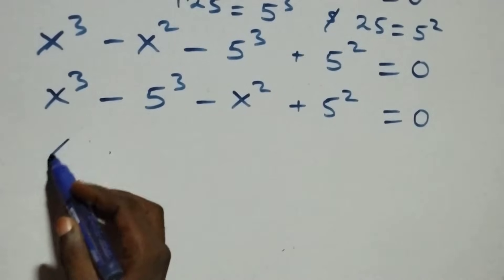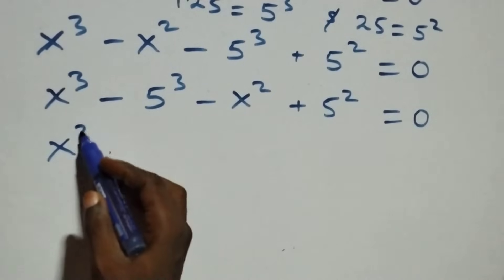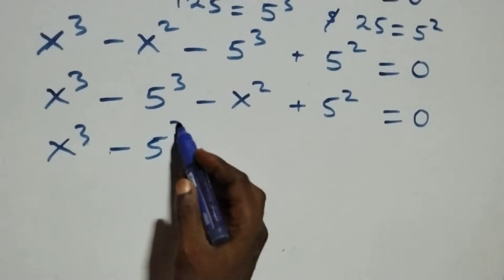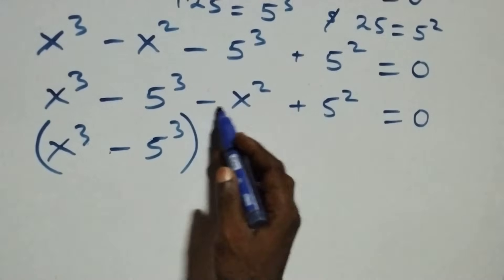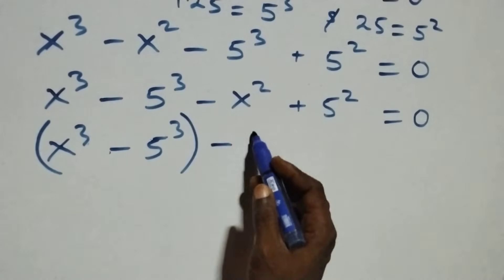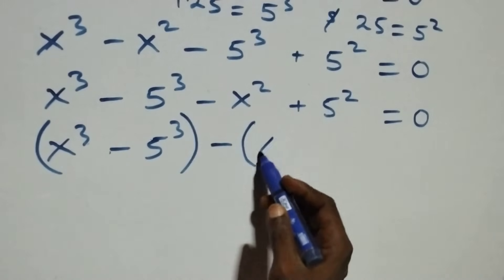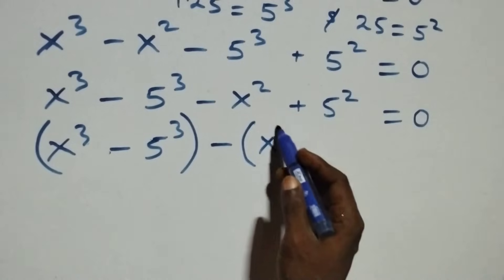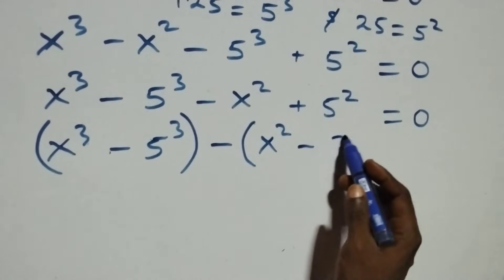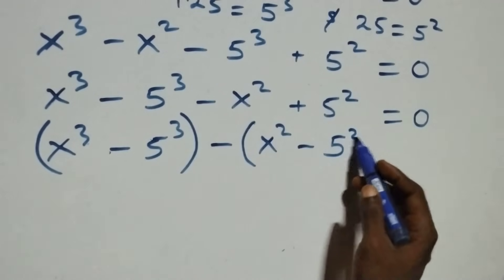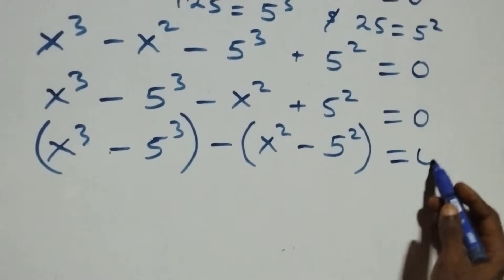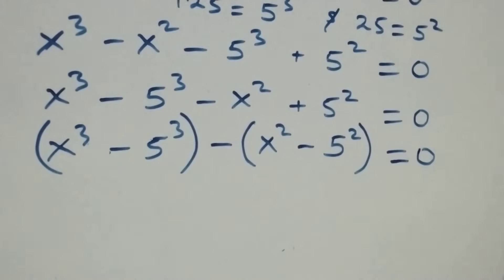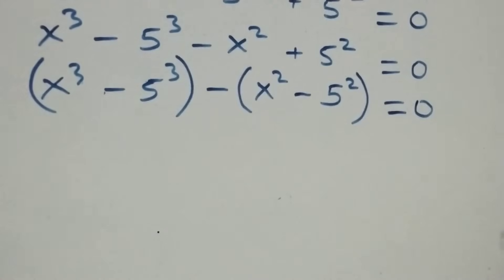We can write this as: x raised to the power 3 minus 5 raised to the power 3, in brackets. Then also, minus is common — we factor it out — we have minus, into bracket, x squared then minus 5 raised to the power 2, close brackets, then equals to zero.